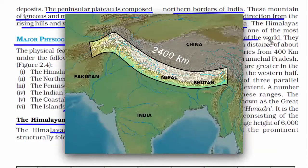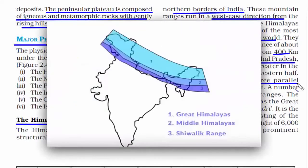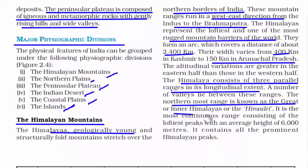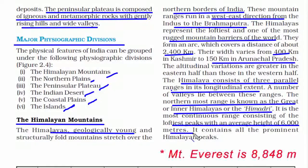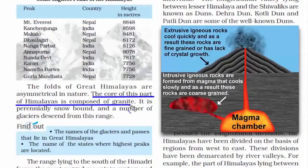The length of this mountain range is 2,400 kilometers and the width is 400 kilometers; towards the eastern side it narrows to about 150 kilometers in Arunachal Pradesh. The Himalayas consist of three parallel ranges. The northernmost range is known as the Greater or Inner Himalayas, or the Himadri. The mountain peaks there have an average height of 6,000 meters. The core of the Himalayas is made of granite — rocks formed due to solidification of magma or lava.